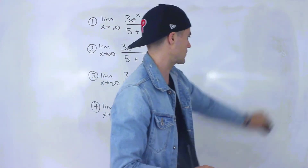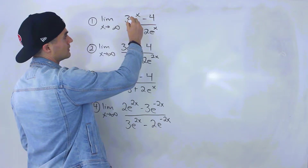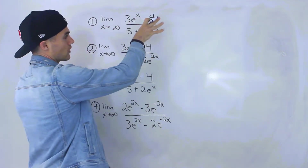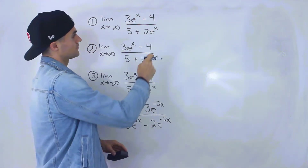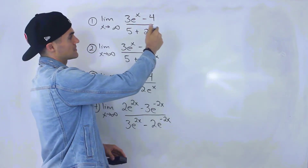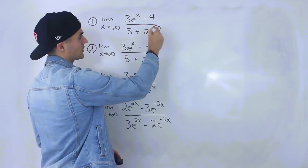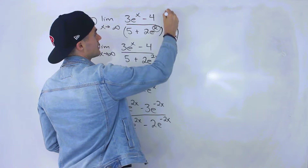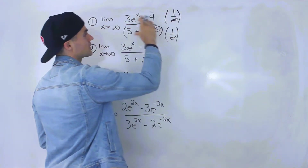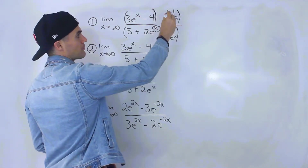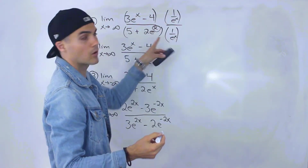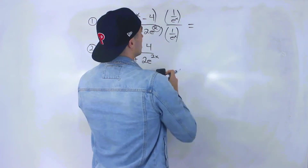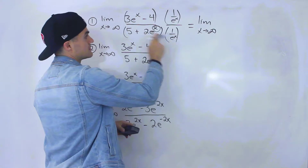Starting with number one: the limit as x approaches infinity of (3e^x minus 4) all over (5 plus 2e^x). Like we did when the numerator and denominator had polynomial functions, we want to divide everything by e to the highest exponent in the denominator. The highest exponent in the denominator is x, so we're going to multiply this entire expression by one over e^x divided by one over e^x, which is like multiplying by one.